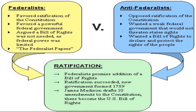As you guys remember, the adoption of the Constitution depended on ratification, or approval, by nine of the 13 states. Ratification started off smoothly, but in Massachusetts, opposition ran strong. Opponents objected to the Constitution's lack of rights for the people, and many delegates refused to support ratification unless such rights were added. In this lesson, you're going to learn how Federalists kept their promise to add a list of rights to the Constitution.